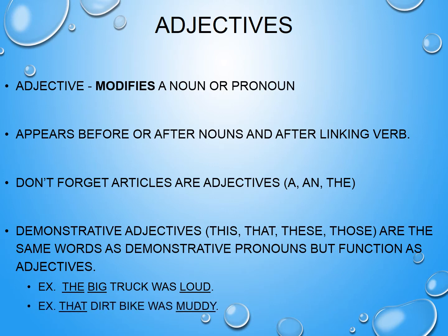Now, take a look at the second example: 'That dirt bike was muddy.' 'That' is a demonstrative adjective, not a demonstrative pronoun, because 'that' is modifying the compound noun dirt bike. You'll also notice a second predicate adjective in this sentence, because the linking verb 'was' is linking the noun dirt bike to the predicate adjective 'muddy.' This gives you a rundown on adjectives — different ways they can be used and a few subsets of adjectives that exist.